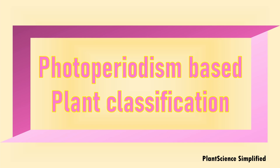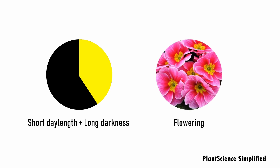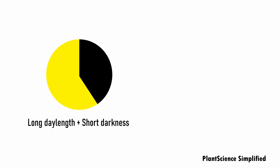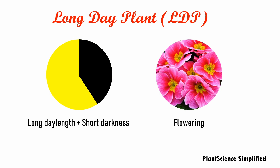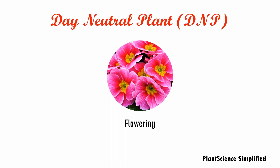Based on photoperiodism and their responses, plants can be classified mainly into three types. When short day length and long darkness is provided and it results in flowering, such plants are called as short day plants or SDPs. When long day length and short darkness durations are given and plants flower, it is called as long day plants or LDPs. Some plants are neutral in their response to these photoperiods and those are called as day neutral plants or DNPs. These are the three important categories based on their photoperiodic responses.